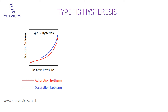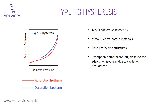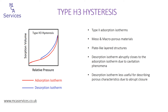Here we have type H3 hysteresis. We now have a type 2 adsorption isotherm, and the presence of hysteresis strongly suggests the presence of porosity. The type 2 nature at high relative pressures is indicative of larger size macropores, which are not completely filled as saturation is approached. H3 hysteresis is associated with plate-like or layered structures. A key feature is the sharp and abrupt closure of the desorption isotherm to the adsorption, and for nitrogen sorption at 77 Kelvin this occurs at about 0.45 relative pressure. This is due to the onset of cavitation or bubble formation during desorption, which means the desorption isotherm becomes less useful for characterising pore size.